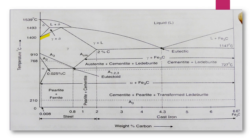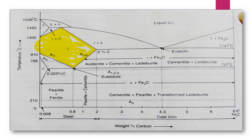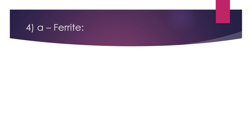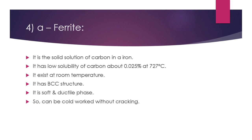This is your austenite phase region. As you can see, the gamma symbol here represents the colored region of austenite in the diagram. The next phase is the alpha ferrite phase — it is the solid solution of carbon in alpha iron.